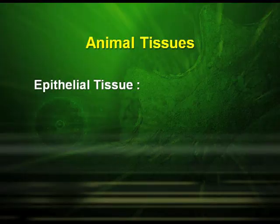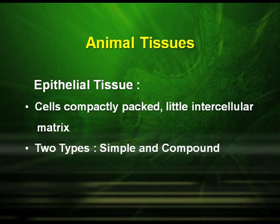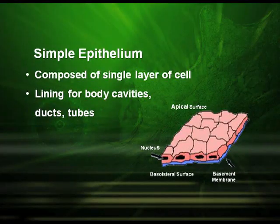Epithelial tissue is generally found in our skin. The cells here are compactly packed with little intercellular matrix. There are two types of epithelial tissues: simple and compound. Simple epithelium tissues are composed of a single layer of cells and are found in the lining of body cavities, ducts, and tubes. Based on shape, they may be of three types.